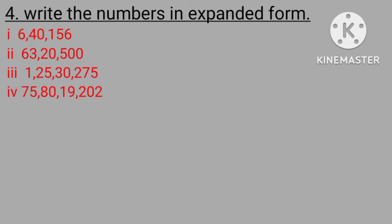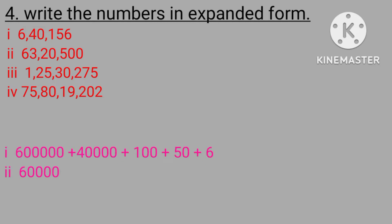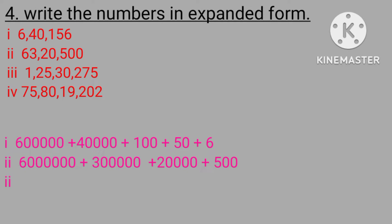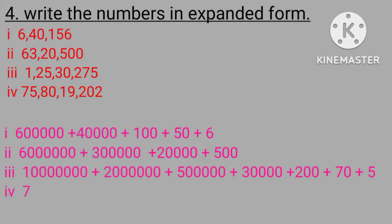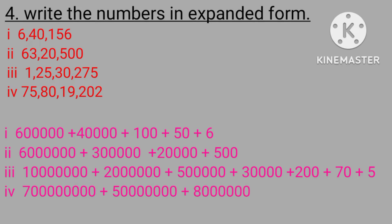Fourth bit — write the numbers in expanded form. We have equations with numbers. Look at here: six lakhs forty thousand one hundred and fifty-six. We need to expand each one — six lakhs plus forty thousand plus one hundred plus fifty plus six.